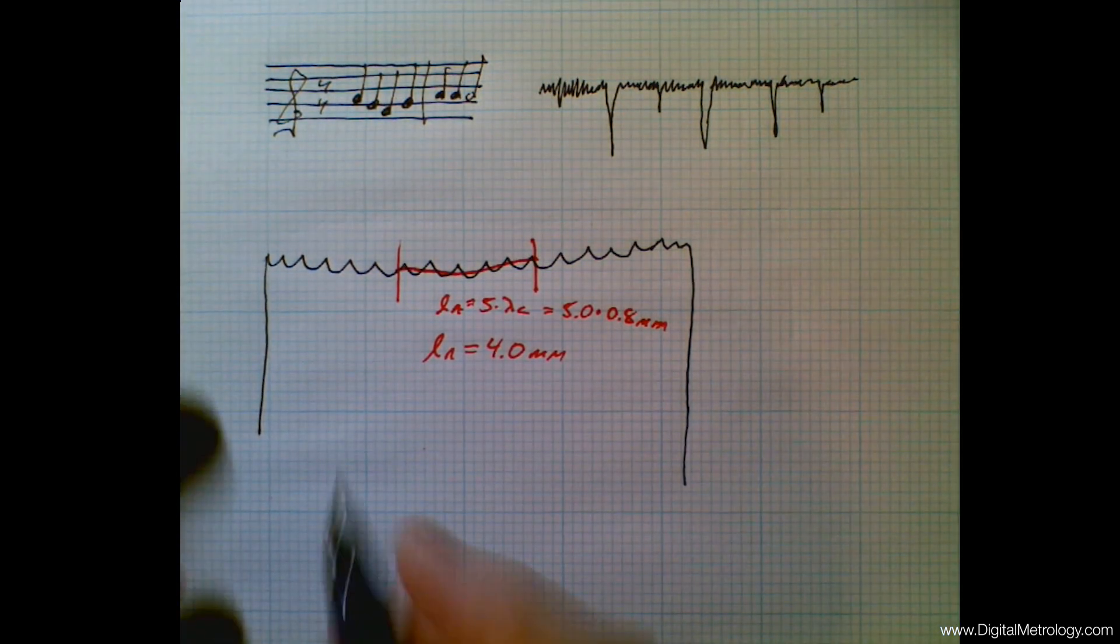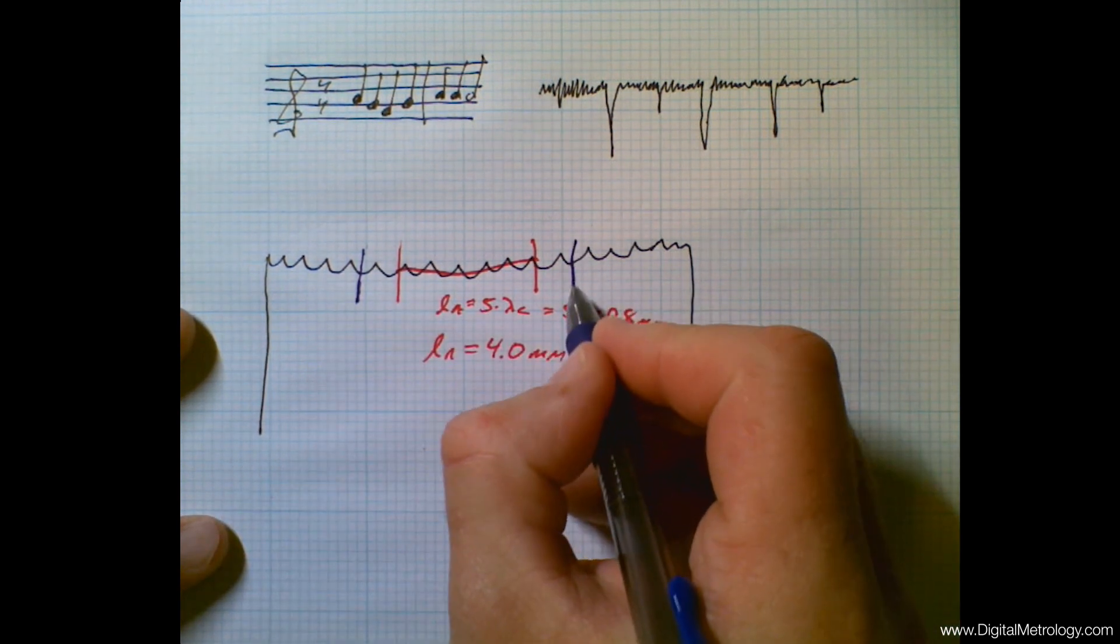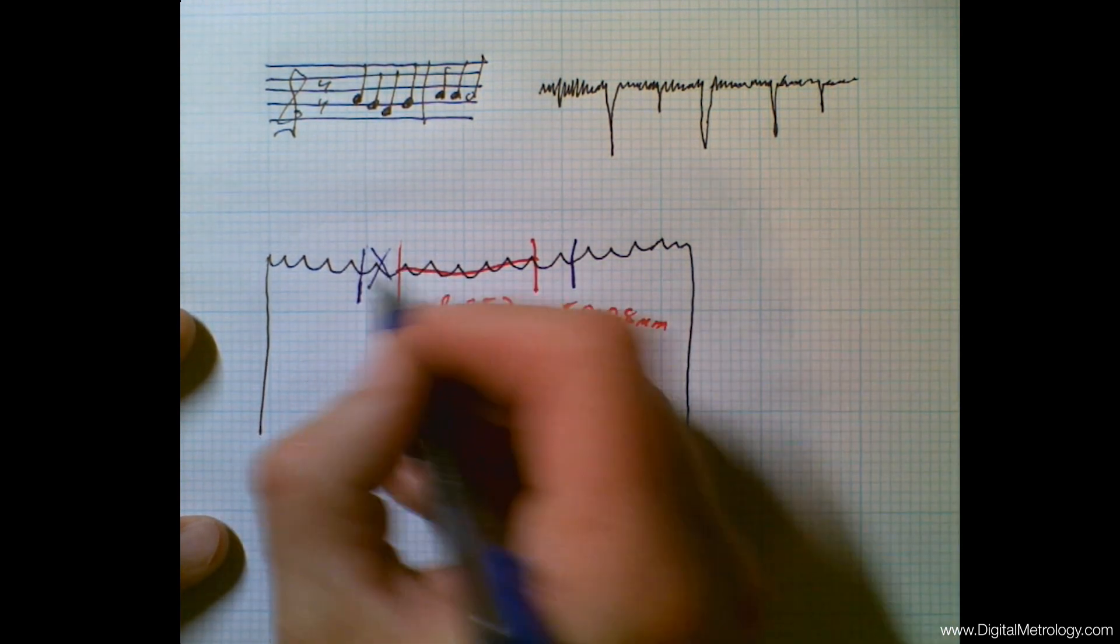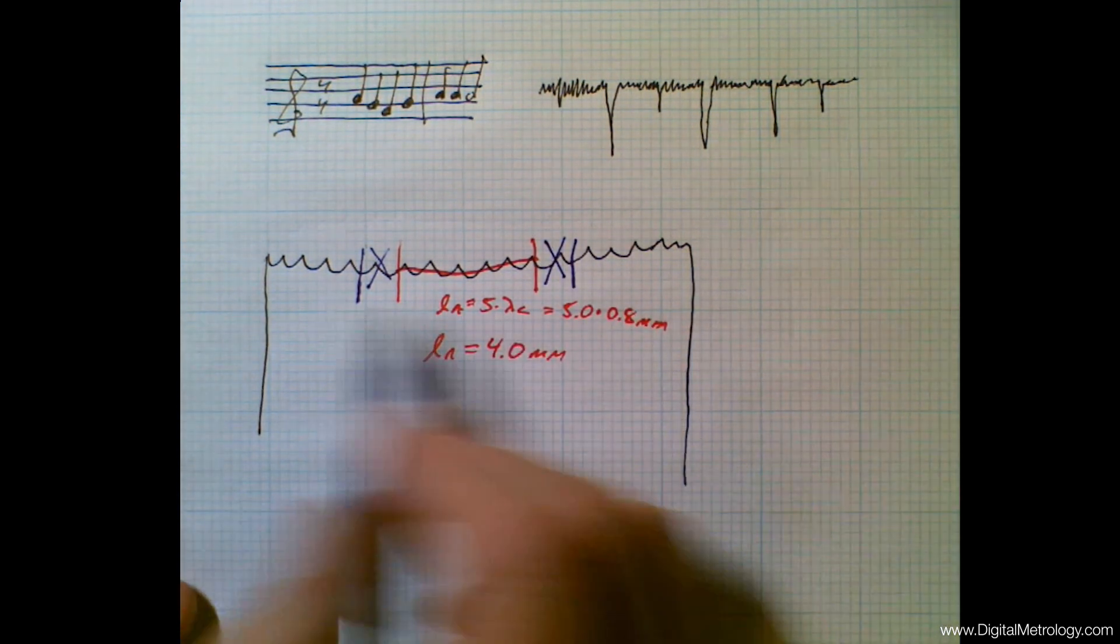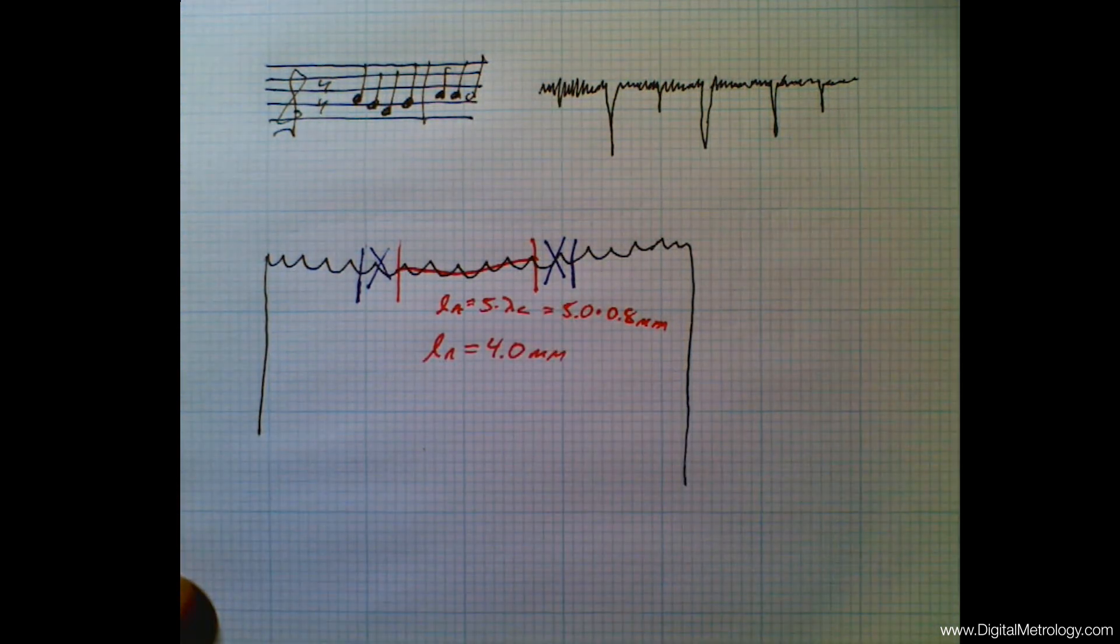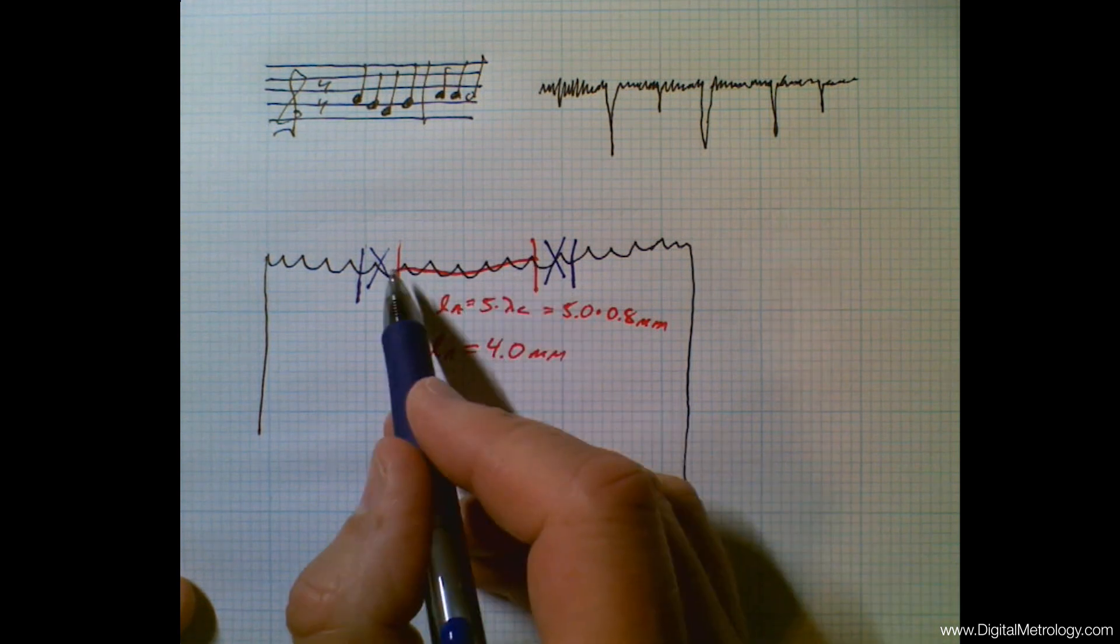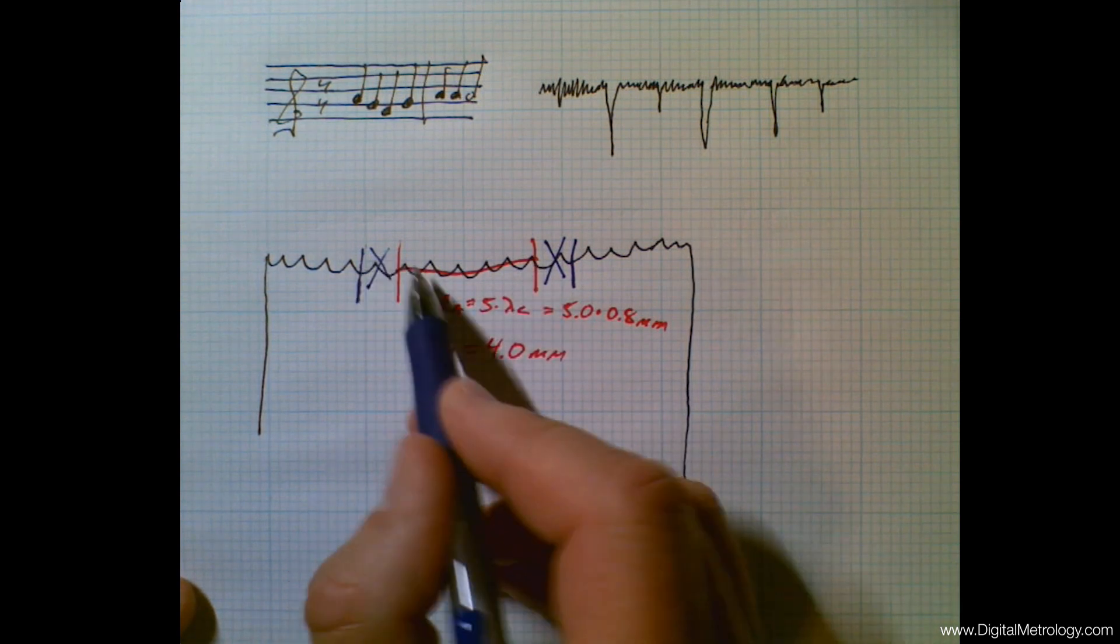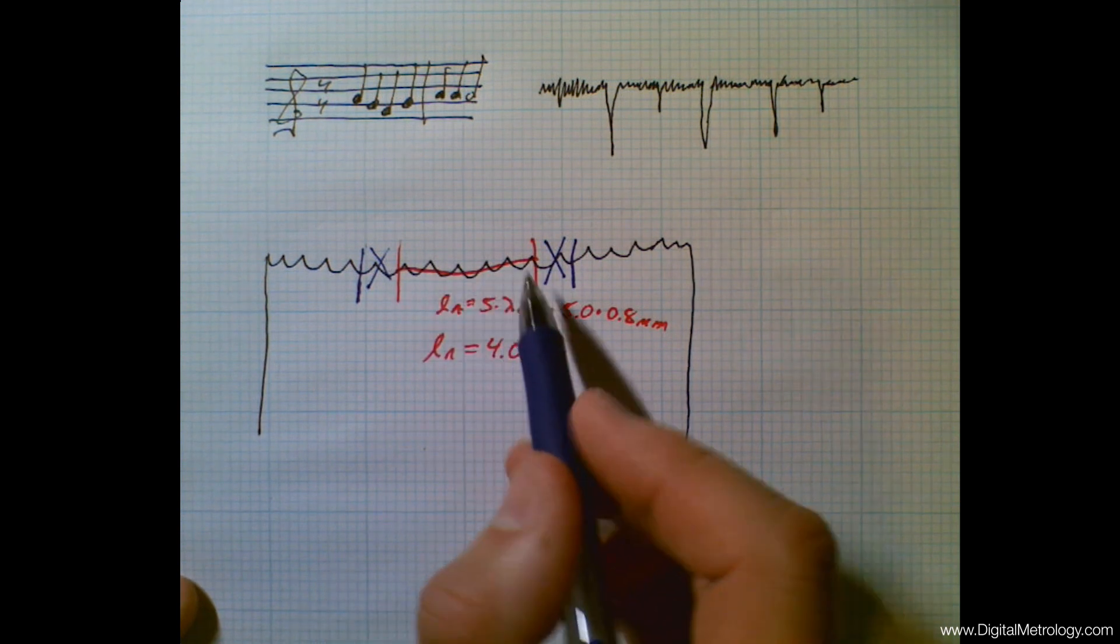Something that happens in this process is we typically need to measure more than the evaluation length. This area right here that I've X'd out and this area that I've X'd out here are needed not for the instrument to speed up and slow down, but they're more needed for the filtering process. Our filter is a moving average, so that moving average needs data on both sides to actually calculate this ending average point.